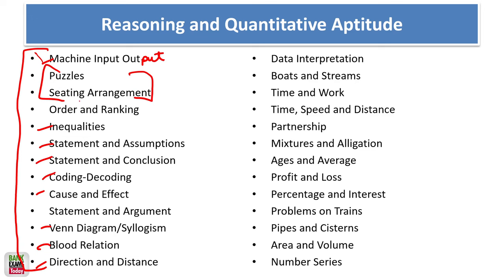For Quantitative Aptitude, the topics include: boats and streams, time and work, time speed and distance, partnership, mixture and allegations, ages, averages, profit and loss, percentages and interest, problems based on trains, pipes and cisterns, area and volume, and number series.